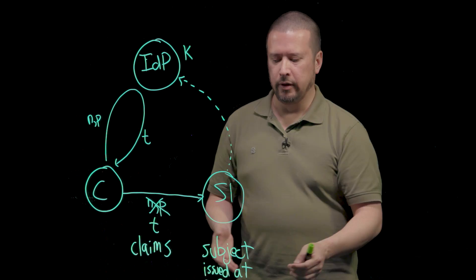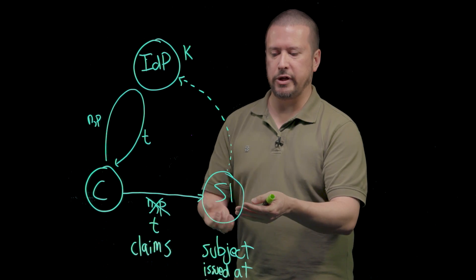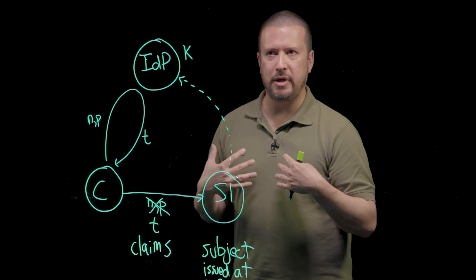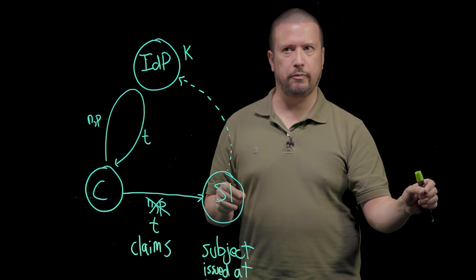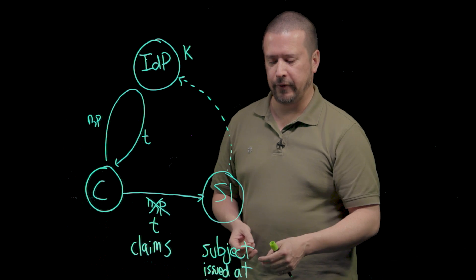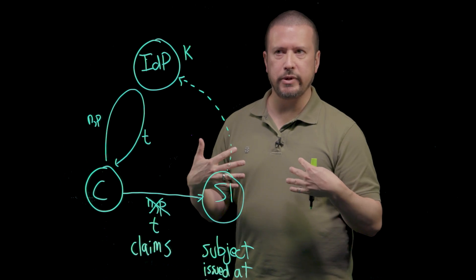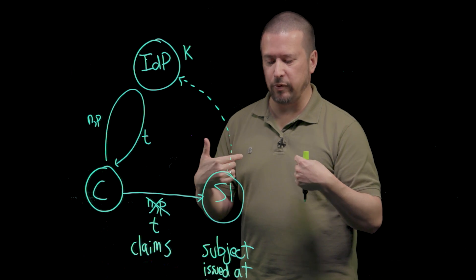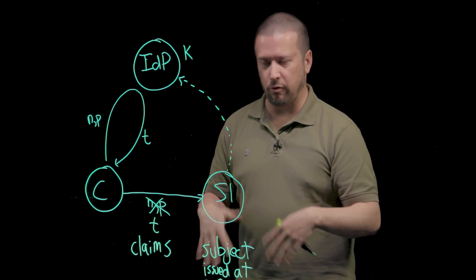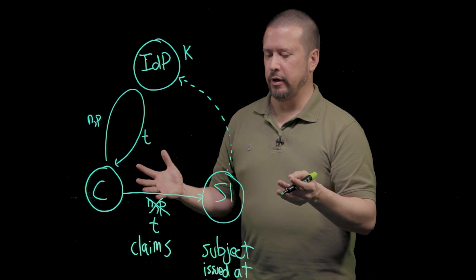If there was no audience in the token and I received a token about some subject at server one, what stops me from simply forwarding that token to some other server and pretending to be whoever that identity was at the client? The audience claim prevents that from happening because if I ever receive a token and the audience isn't written to me, then I know to just throw the token on the floor.